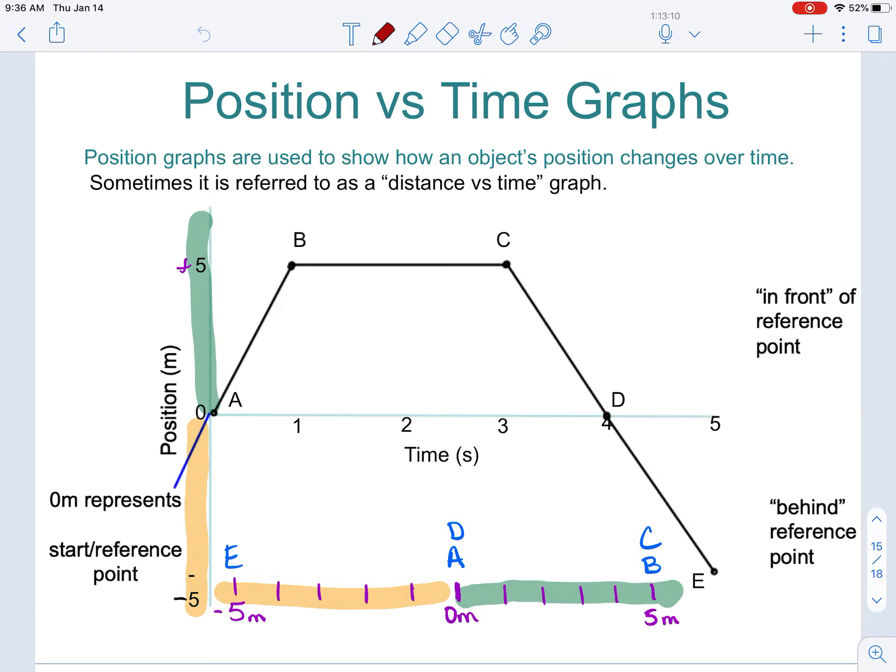When we look at a position time graph or a distance time graph, I want to first point out that we have the position or the distance measured in meters listed on the y-axis of our graph. On our x-axis, we have our time that is measured in seconds.